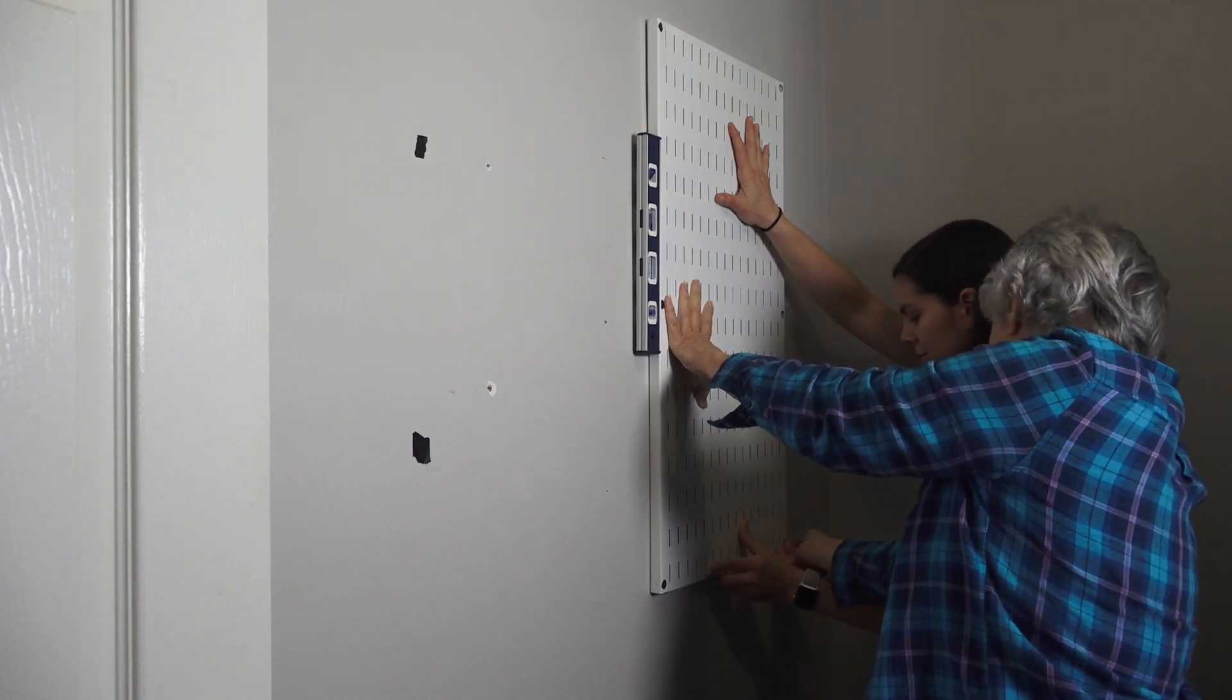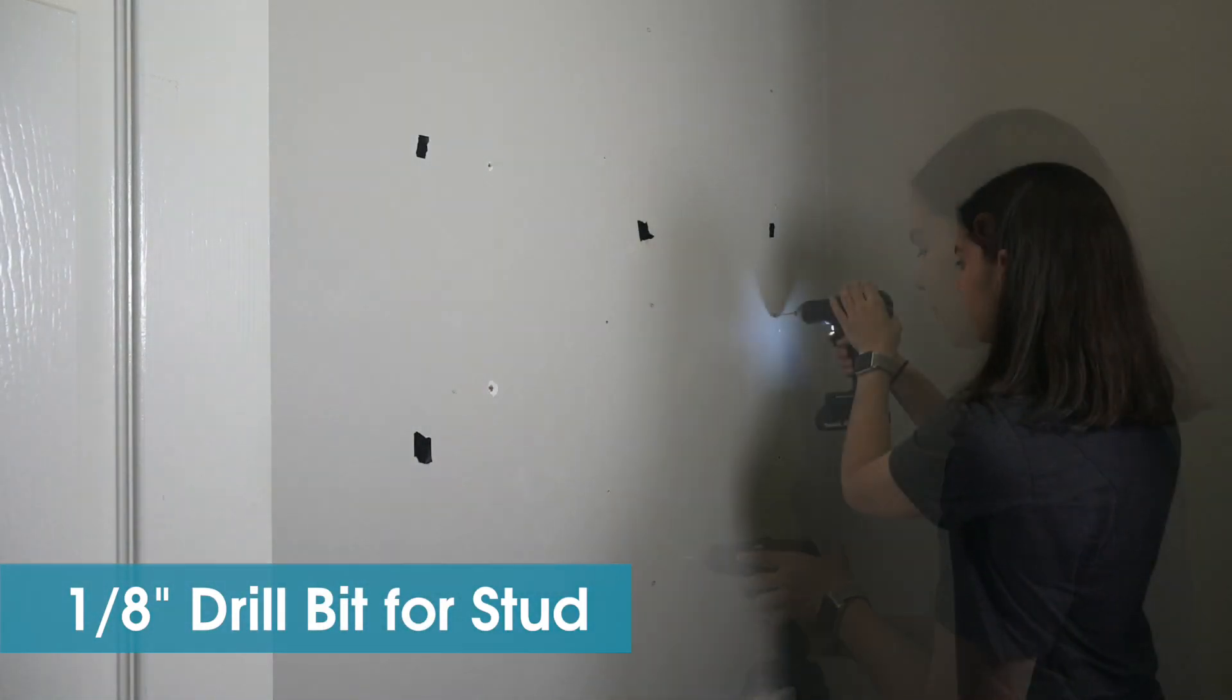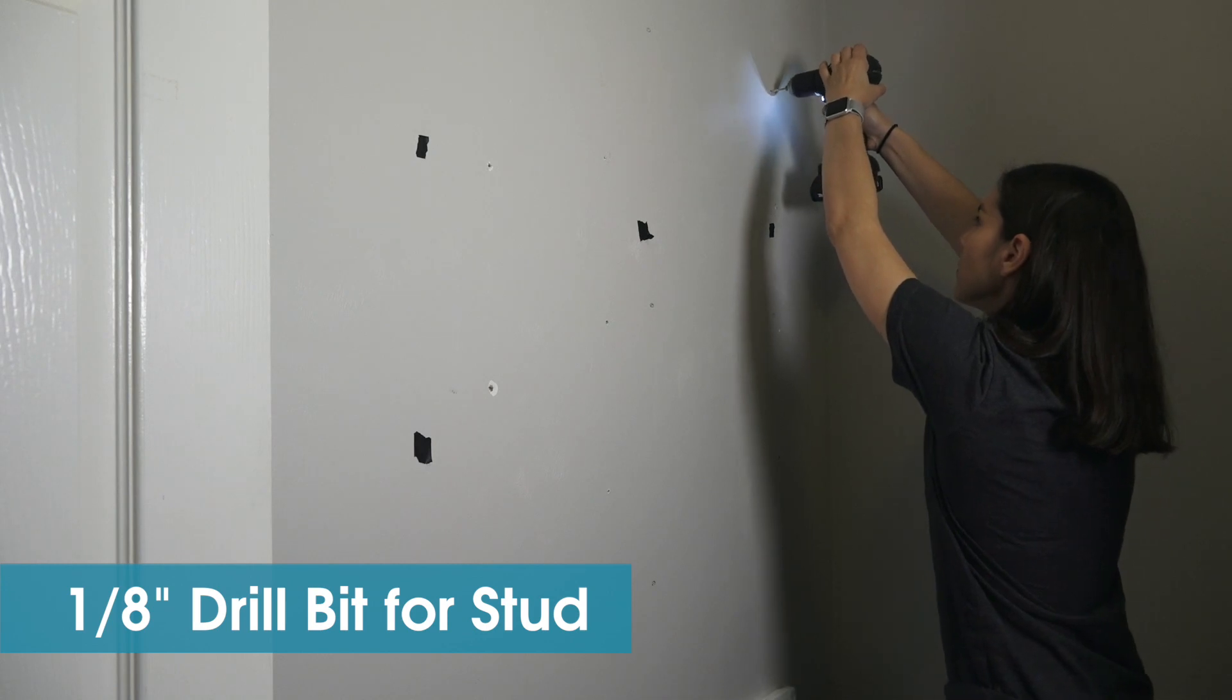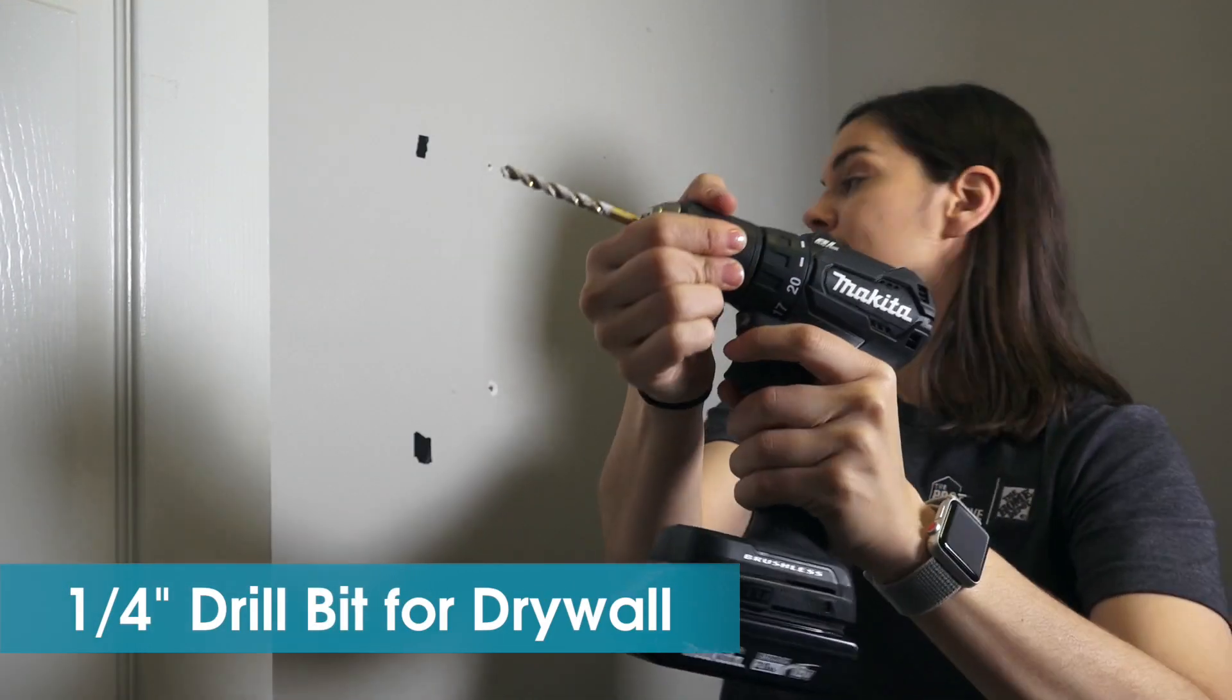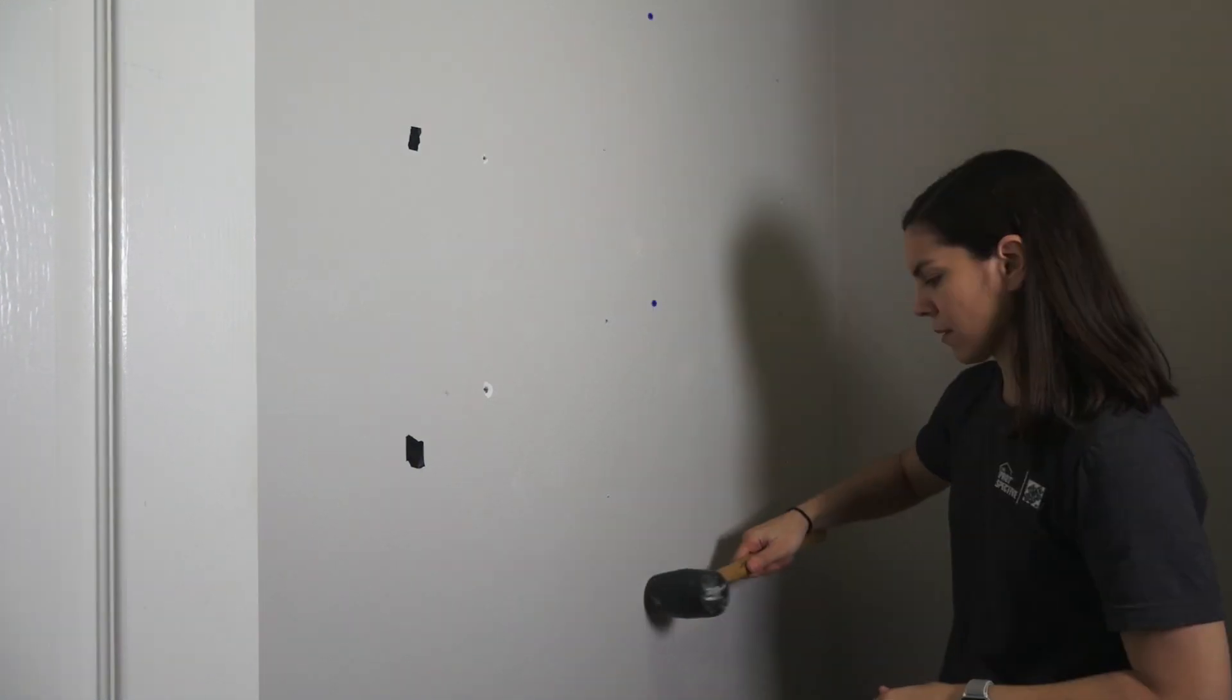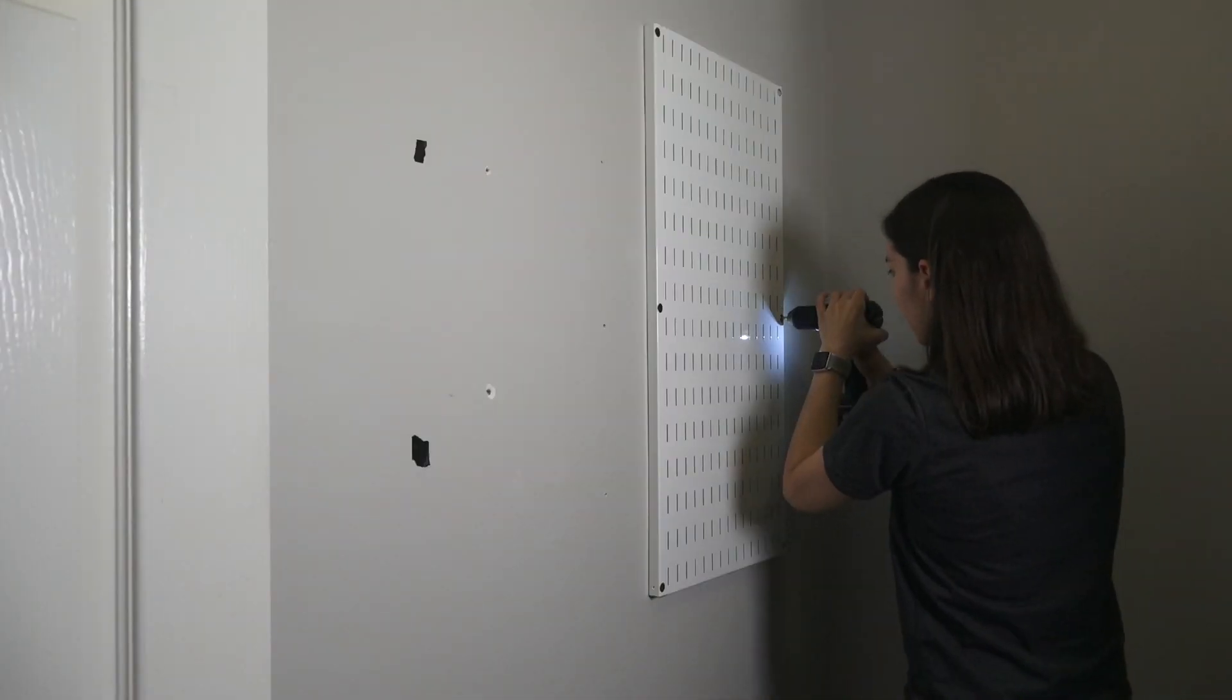The screws are included with the kit, and the instructions say to use a 1 1/8 inch drill bit for studs, and that's what we're doing here. For the screws that won't be in studs, we're using a 1/4 inch drill bit to make pilot holes for the anchors. We put the anchors in place using a mallet if necessary. We screwed the panels into place.